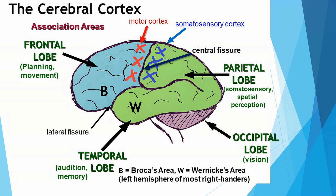Something interesting about the parietal lobe is that when there's severe damage to the right parietal lobe, an individual is likely to exhibit something called left side neglect, meaning they neglect the left side of their body. If they wake up in the morning and start getting dressed, they'll put their right arm in the right sleeve of a shirt and forget to put the left arm in the left sleeve, or the right leg into the right pants leg but not the left. If you ask someone with left side neglect to stand facing forward and describe everything they see in front of them, they will neglect everything in their left visual field, describing only what they see in the right visual field.